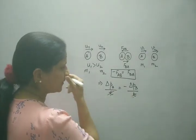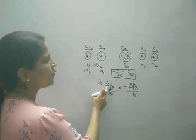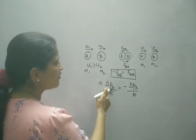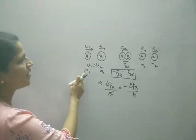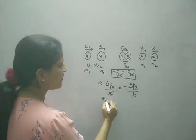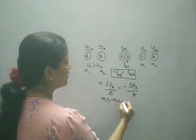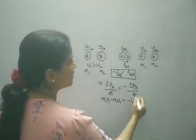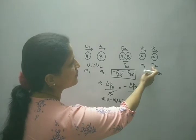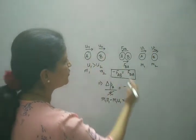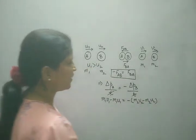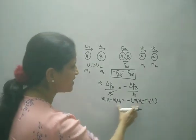Delta P_A means change in momentum of ball A, delta P_B means change in momentum of ball B. How did momentum of A change? First it was M1U1, then M1V1, so change in momentum of A is M1V1 minus M1U1. With negative sign, change in momentum of B is M2V2 minus M2U2.